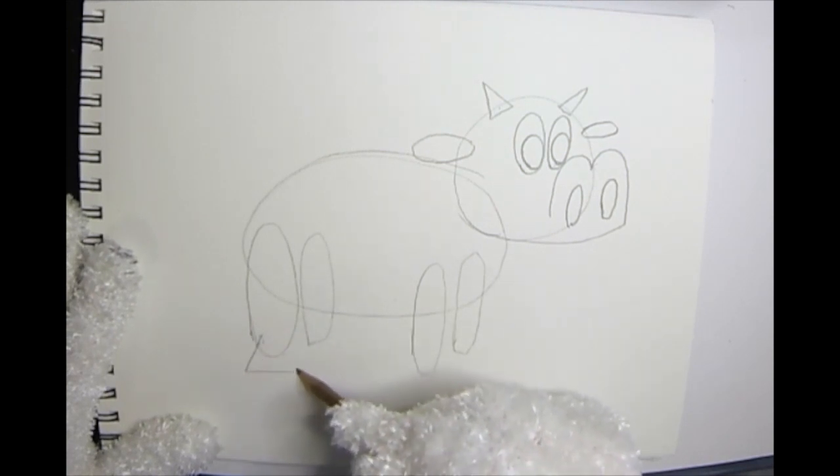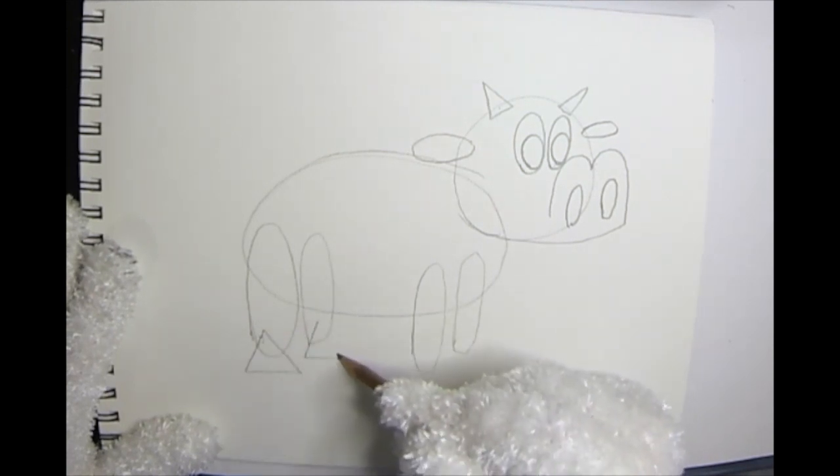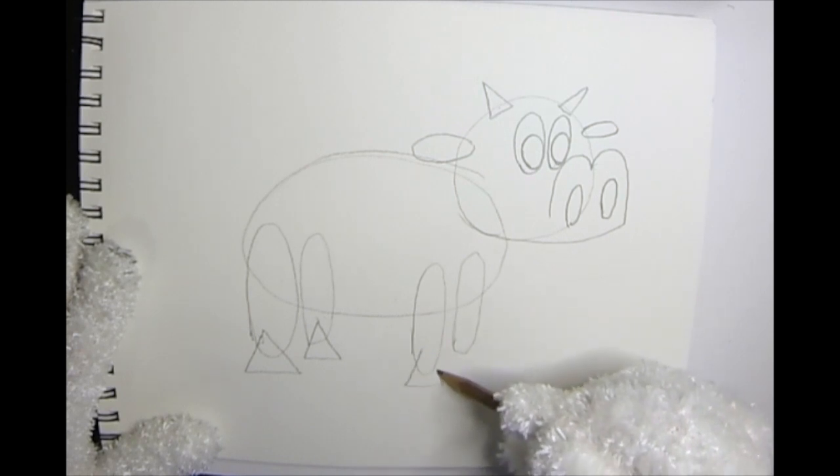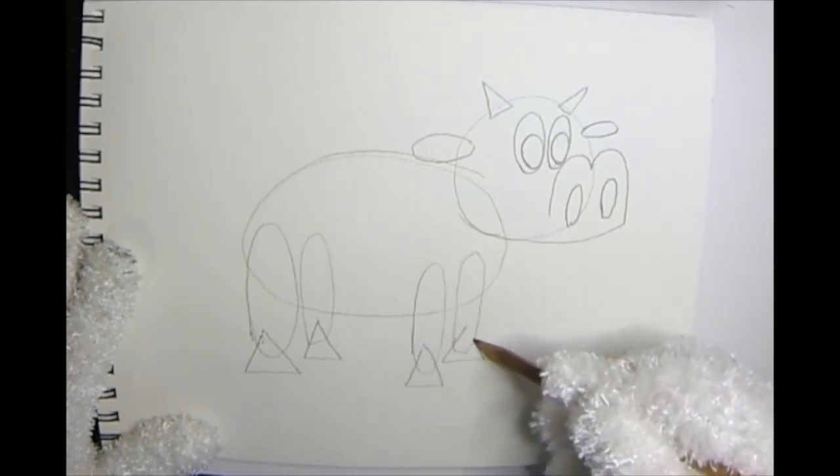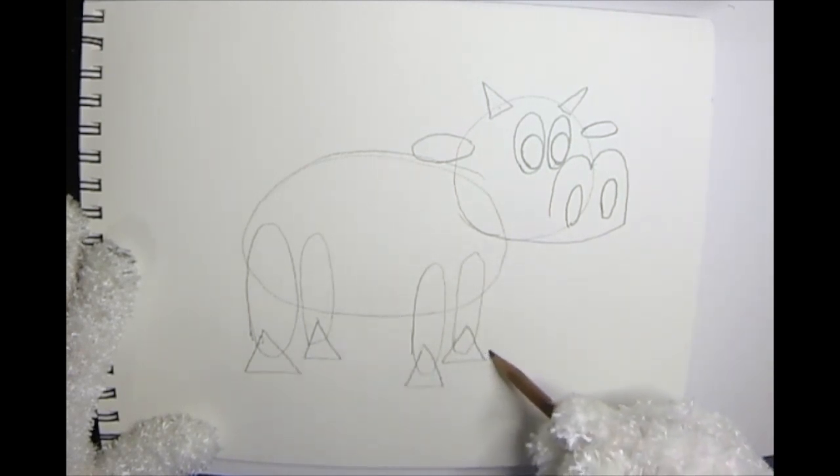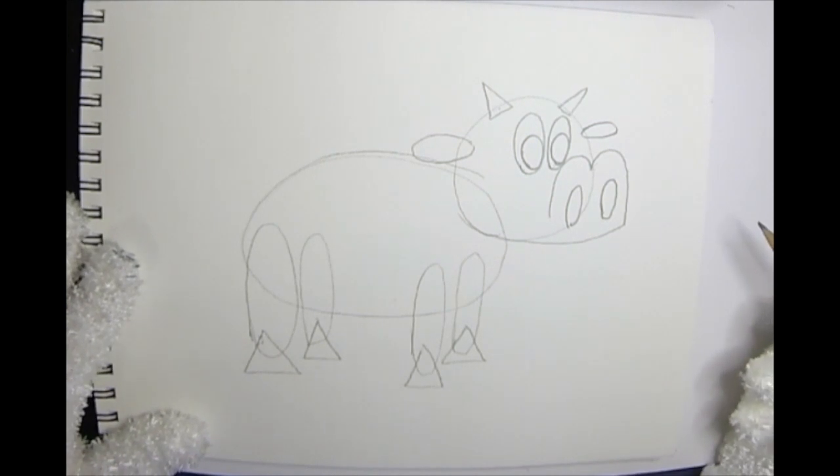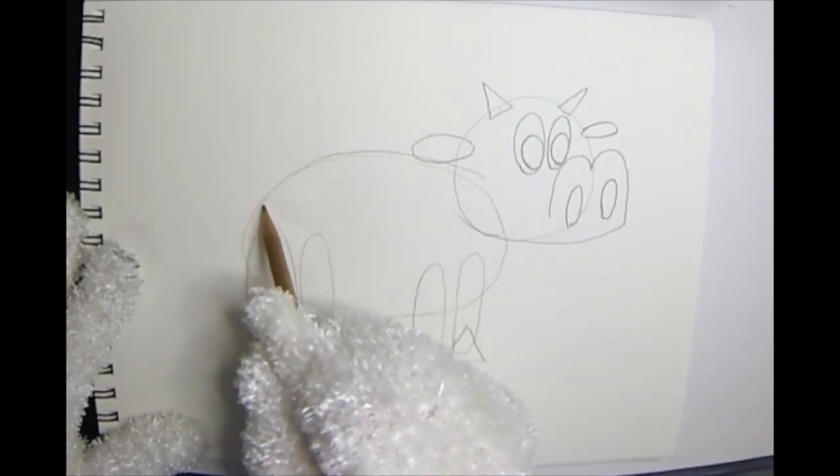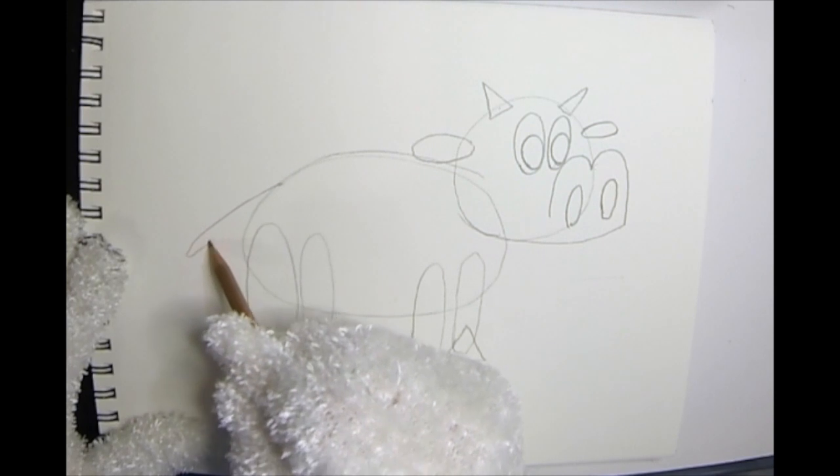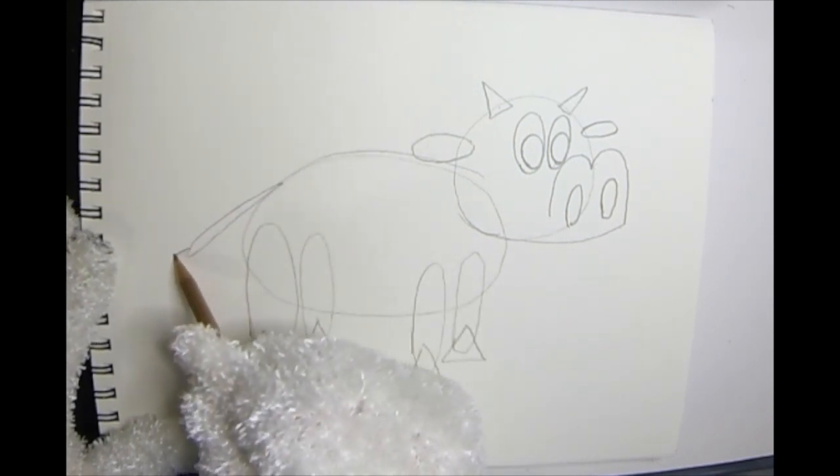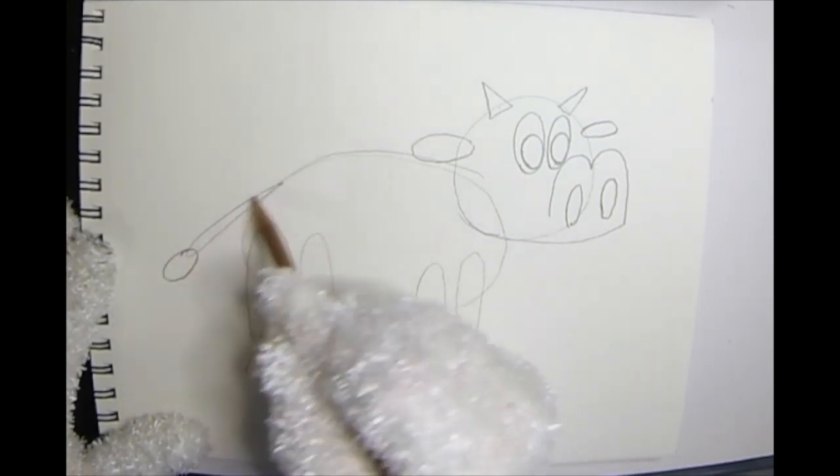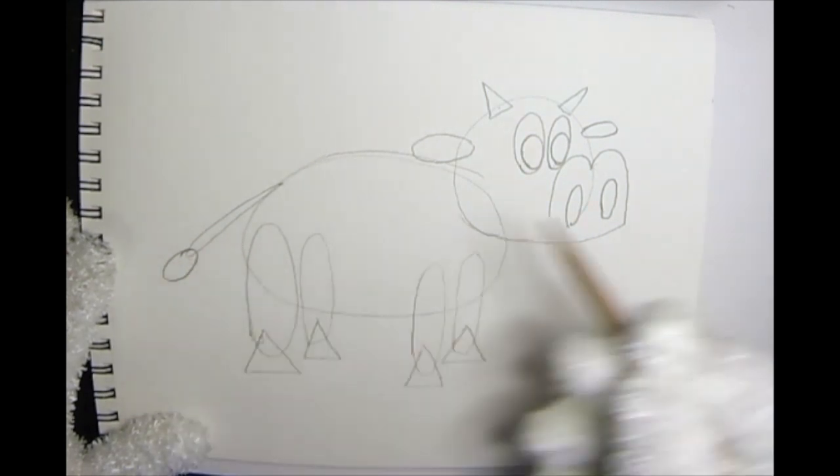Now for the bottom, we're going to repeat triangle shapes. There we go. One, two, three, and four triangles. There we go. All right. Now we're going to add another oval, a little skinny one on the back, and then one more attached to it at the edge for the tail.